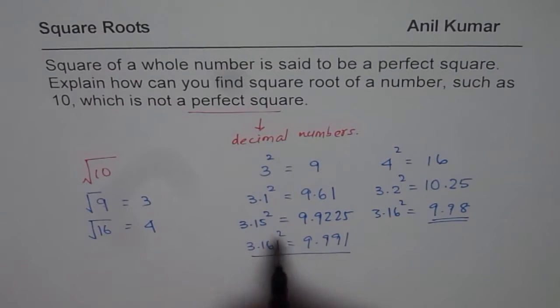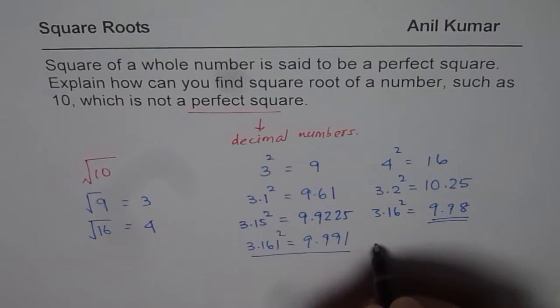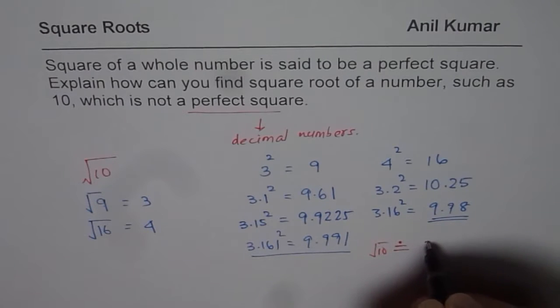So, likewise, we can estimate square root of a number and we say, well, square root of 10 is approximately, we write like this, approximately equal to 3.161.